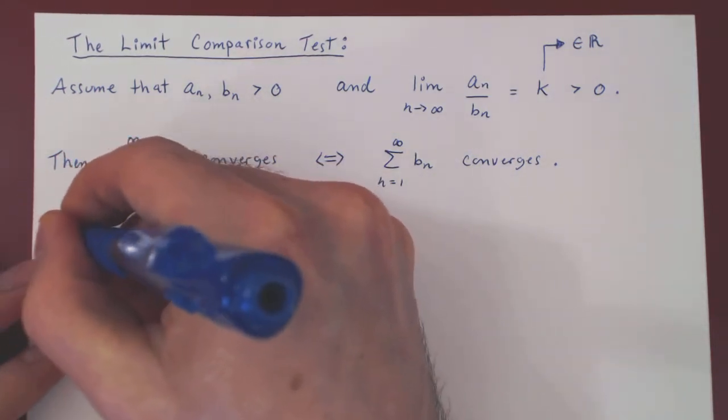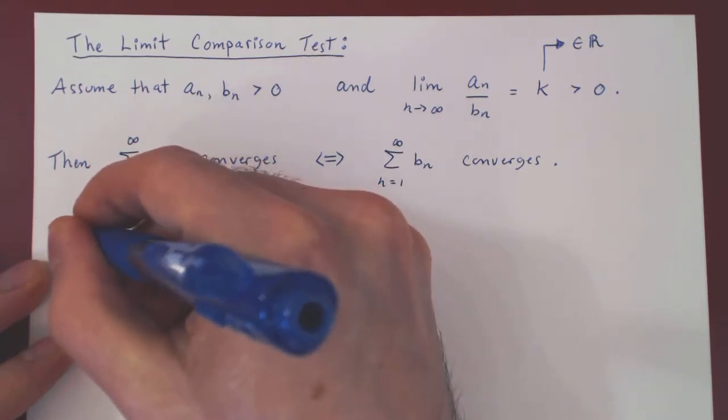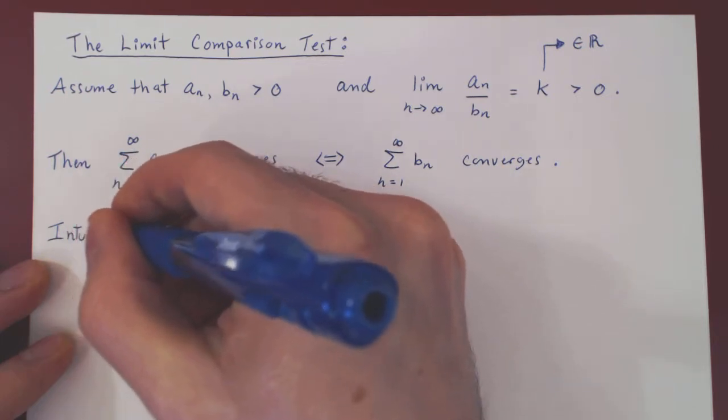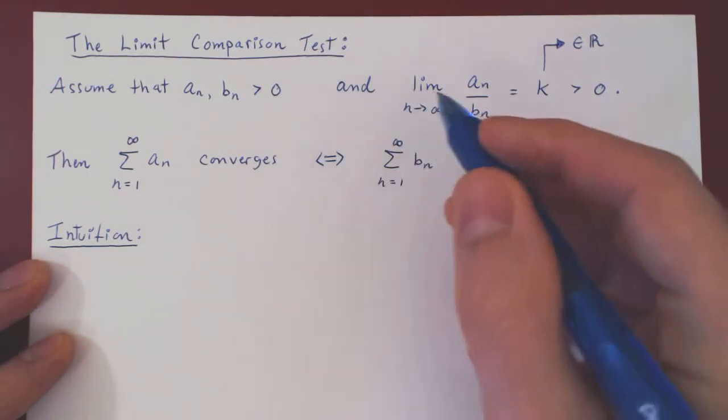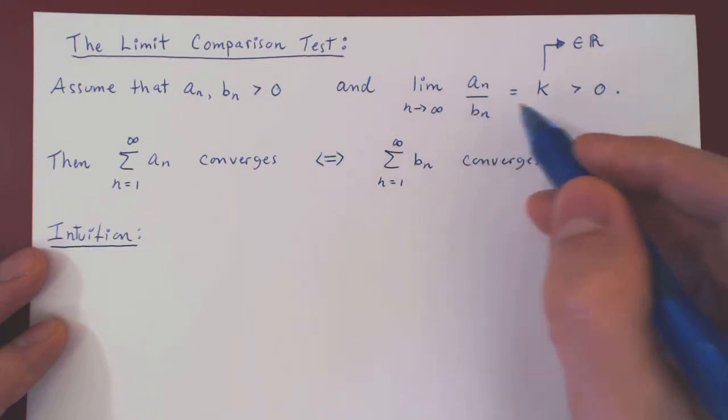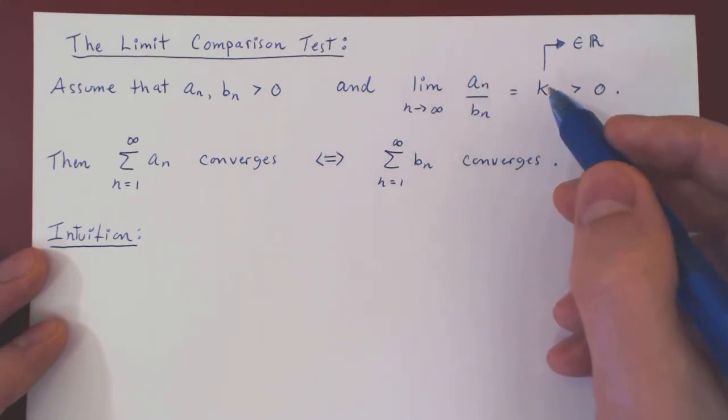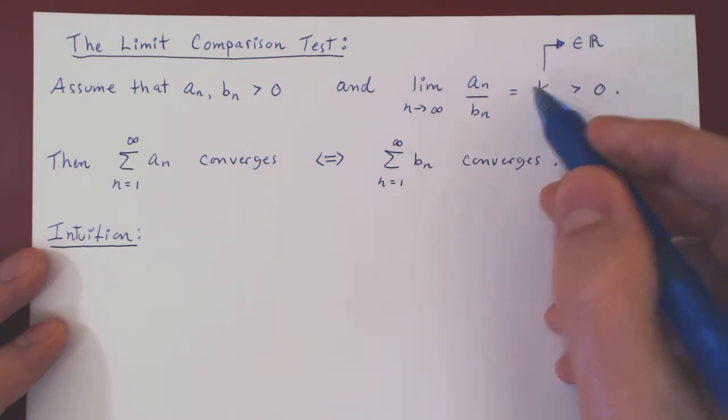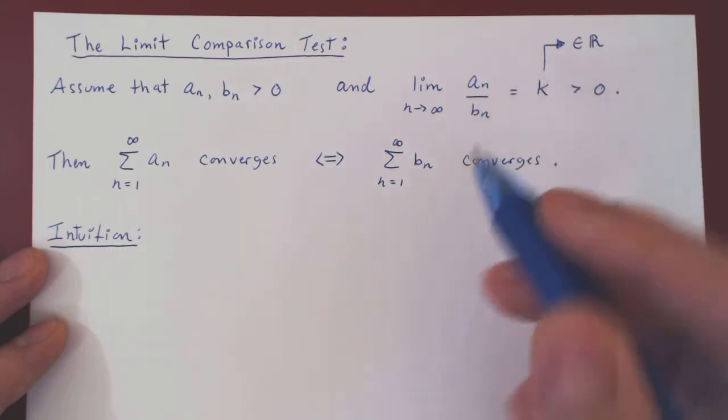So here's the intuition. So let's look at the assumption. We're saying that, as n goes to infinity, an over bn equals k. What does that mean? It means that when n becomes bigger and bigger and bigger, the ratio an over bn becomes closer and closer to k. So that means that when n is large, an over bn is roughly equal to k.